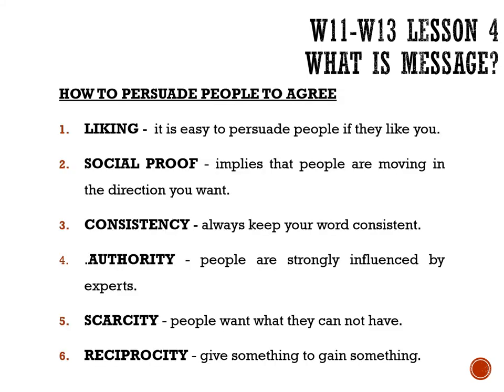How do we persuade people to agree? There are factors to learn about why people agree with certain situations or types of people. First is liking — it is easy to persuade people if they like you. Second is social proof, which implies that people are moving in the direction you want. Third is consistency — always keep your word consistent and firm. Fourth is authority — people are strongly influenced by experts. Fifth is scarcity — people want what they cannot have. And sixth is reciprocity — giving something to gain something.